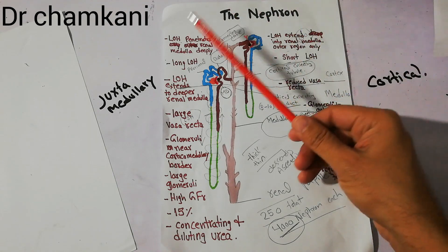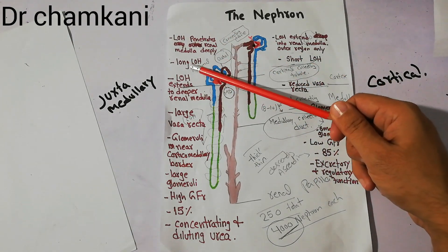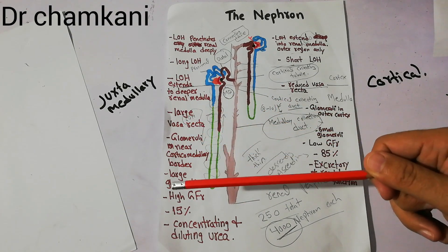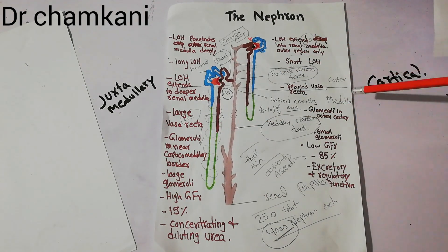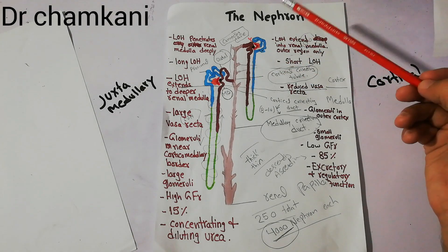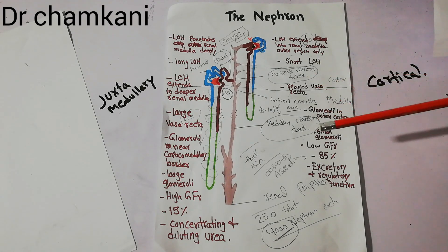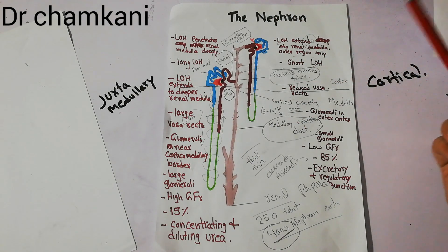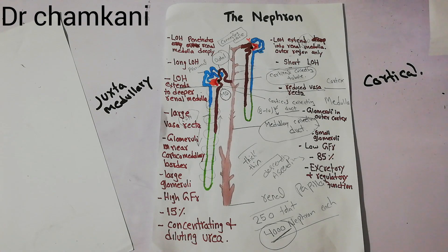In summary, juxtamedullary nephrons have glomeruli at the border of the cortex and medulla, a long loop of Henle extending deep into the medulla, larger vasa recta, larger glomeruli, high GFR, and a role in concentrating urine — comprising only 15 to 20% of nephrons. Cortical nephrons have glomeruli in the outer cortex, shorter loop of Henle, reduced vasa recta, small glomeruli, low GFR, and are more important in excretory and regulatory functions — comprising around 85% of total nephrons. Thanks a lot for watching the video.